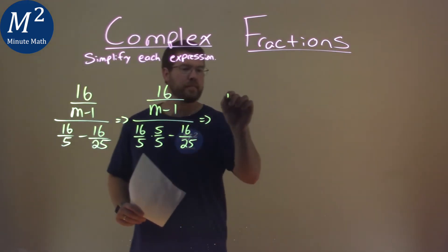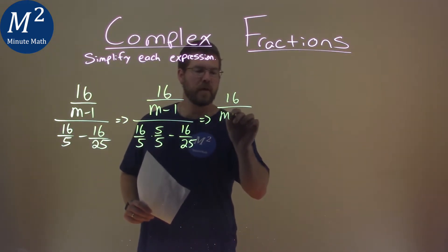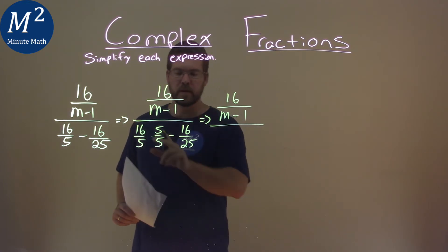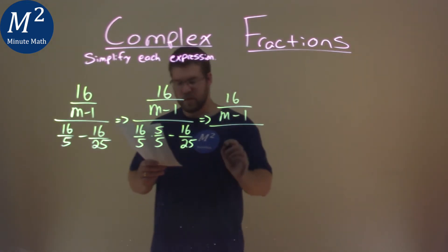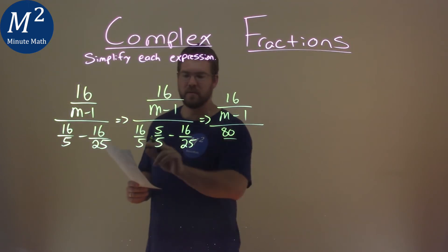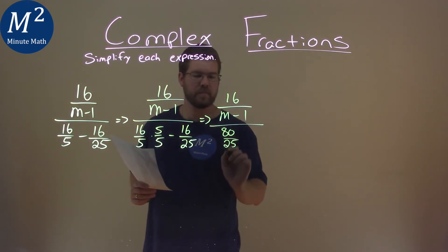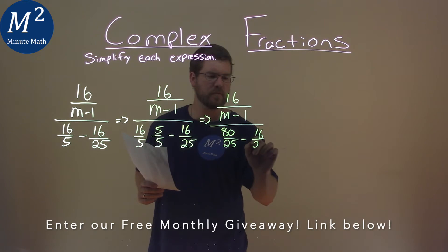Let's show that step: 16 over m minus 1, over 16 times 5 comes out to be 80, and 5 times 5 is 25. And then we're subtracting 16 over 25 here.